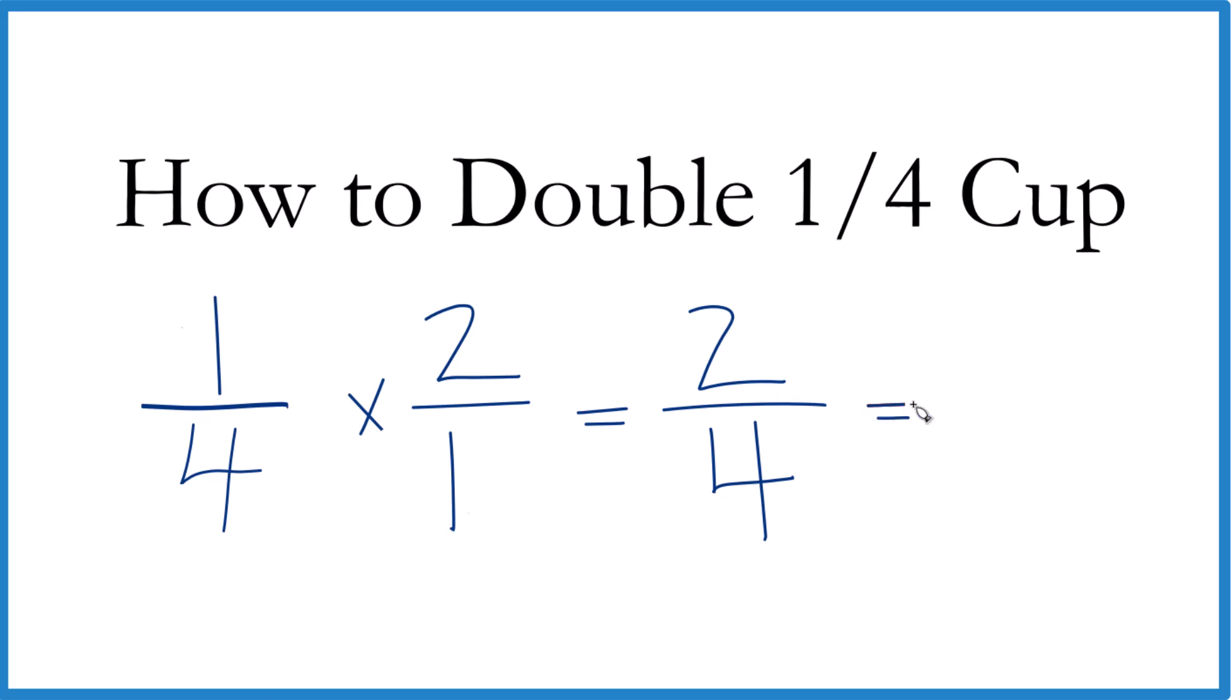You could also simplify this, since this is an even number here and here. So if you divided the top by 2, you would get 1. And if you divided 4 by 2 here, you would get 2, which is 1 half. And that's what we said before.